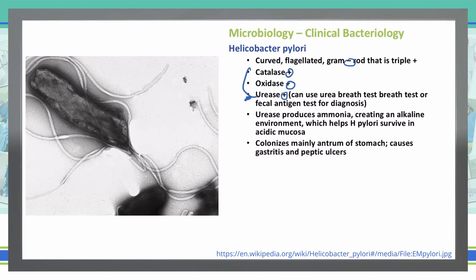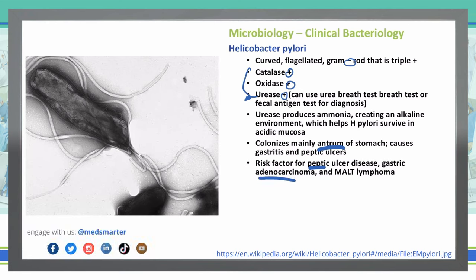Most commonly this will be found in the antrum of the stomach, and that can lead to gastritis and peptic ulcers. The biggest risk factor for H. pylori infections is peptic ulcer disease. It can also lead to a gastric adenocarcinoma or a MALT lymphoma. So it is important that we treat H. pylori infections.